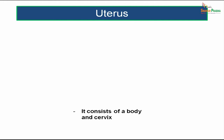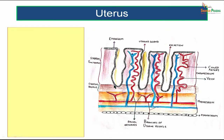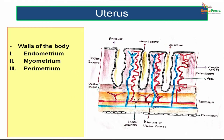We will come to the reproductive organs first, the foremost being the uterus. It consists of a body and a cervix. The walls of the uterus are made up of three layers: the innermost lining being the endometrium, after that a muscle layer called the myometrium, and towards the periphery, the perimetrium.